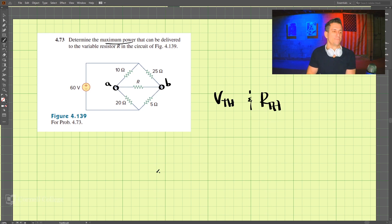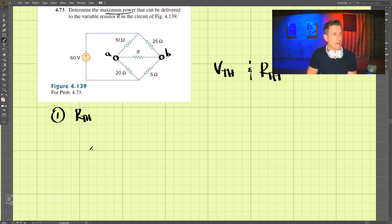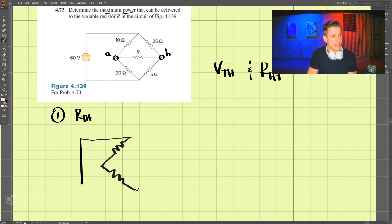The first step is to turn off all independent sources and find the Thevenin resistance. So we turn off the source and we get a simplified circuit.